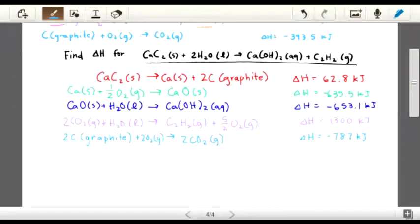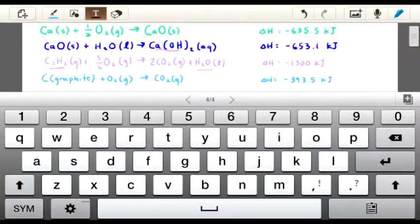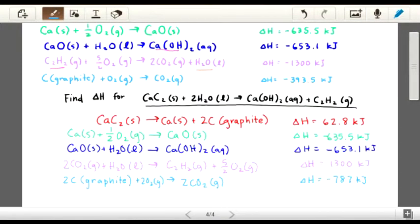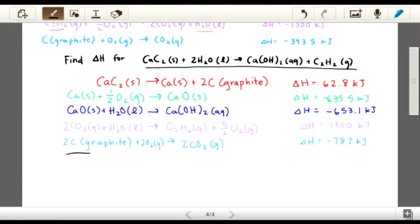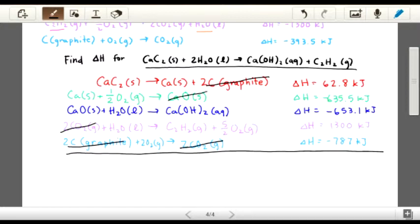Okay, so now we're going to be able to cancel things out. So the 2C graphite and 2C graphite will cancel out. The 2CO2 and 2CO2 will cancel out. The CaO and CaO will cancel out. The Ca and the Ca will cancel out. The 5 halves O2 and the 2 plus 1 halves O2 will cancel out.